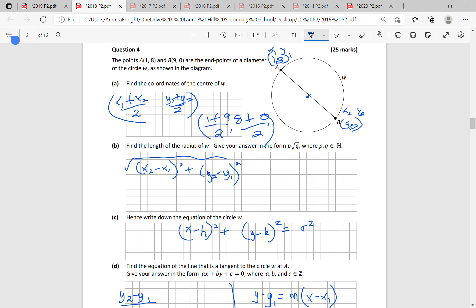The first bit into the calculator and the second. So 1 plus 9 over 2 into the calculator gives me 5, and 8 plus 0 over 2 gives me 4. So that's your centre there, 5, 4.